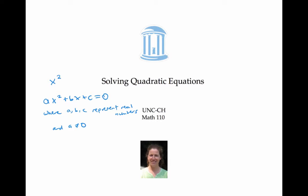For example, three x squared plus seven x minus two equals zero is a quadratic equation in standard form. Here, a is three, b is seven, and c is minus two. The equation three x squared equals minus seven x plus two is also a quadratic equation — it's just not in standard form.